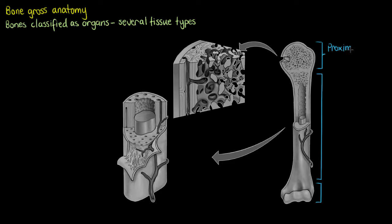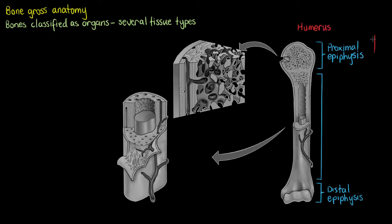The top portion is what we call the proximal epiphysis, because it's closest to the attachment point of the trunk. At the other end we have the distal epiphysis, named relative to their position. This bone is the humerus, the bone in the upper half of your arm — so the proximal end is at the shoulder, and the distal end is down towards your elbow leading towards your hand.